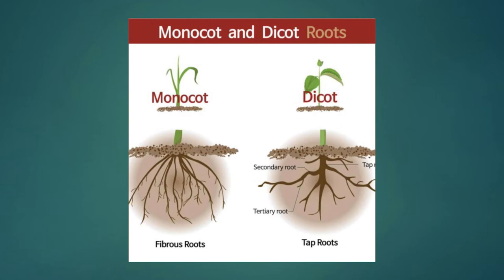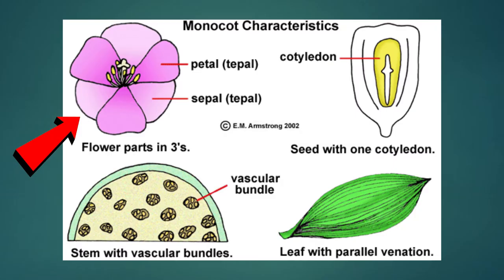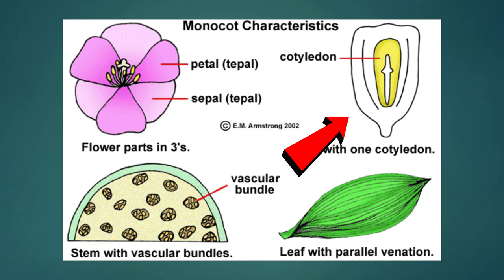In monocots, secondary growth is absent, while in dicots secondary growth is often present. Now we're going to look at some pictures for a clearer understanding of monocots and dicots. Here it's even a little clearer, where we have the petal and the sepal, the cotyledon, the seed with one cotyledon, and the vascular bundle. The flower parts are in threes, and the stem shows scattered vascular bundles.